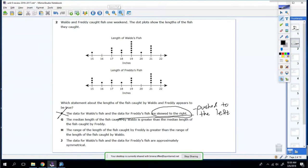So G, the median length of the fish caught by Waldo is greater than the median length of the fish caught by Freddy. So we're going to find the median for both. The median, I'm actually just to save some time, the median for Waldo's fish is 19. And the median for Freddy's fish is also 19 as well. Remember, just cut down on the dots like this. And when you cut down evenly, you get to 19. So G is wrong.